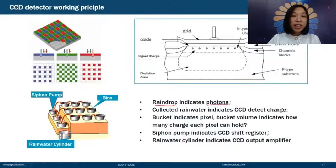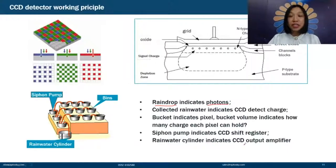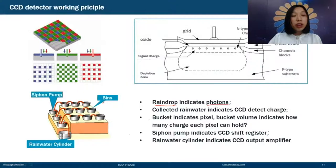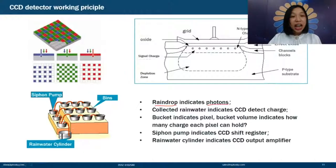So the process of pouring rainwater through the register and into the output cylinder is the working principle of the CCD detector: transferring electric charge, converting it to voltage, and reading it out. Each pixel stores electric charge, and the bucket volume indicates how much each pixel can hold — the full-well capacity.